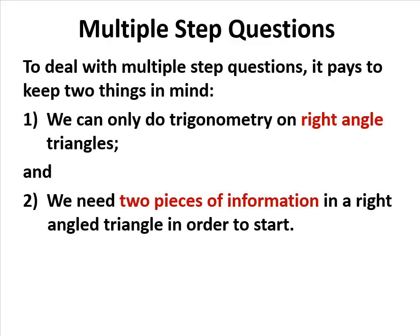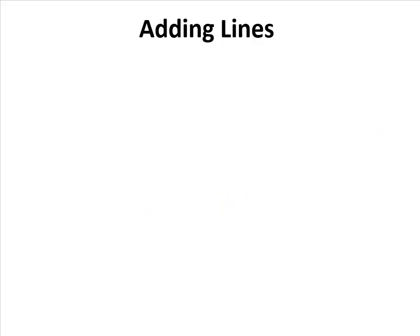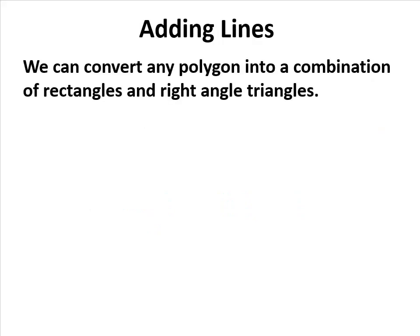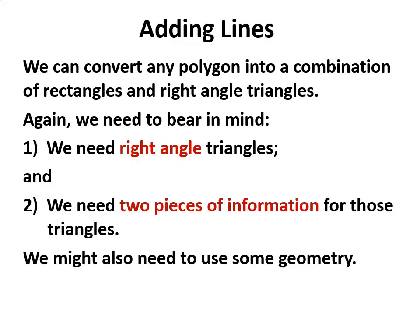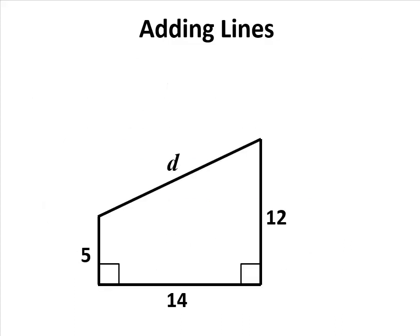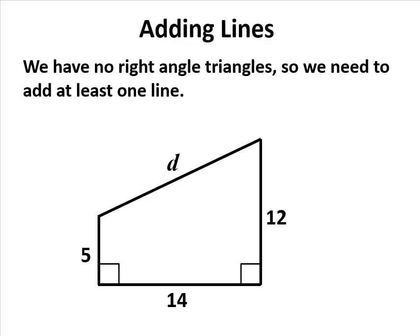The next thing we might have to do is add lines. We're adding lines to convert into right angle triangles and rectangles only. And we need those right angle triangles to have two pieces of information. There may be some geometry thrown in. Let's have a look at a very standard problem: a trapezium.